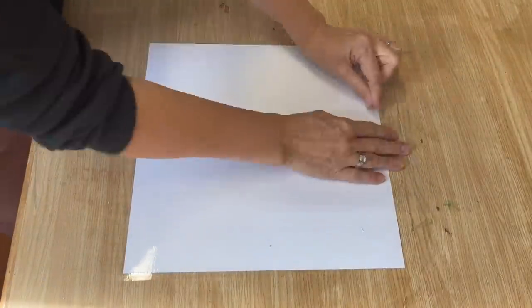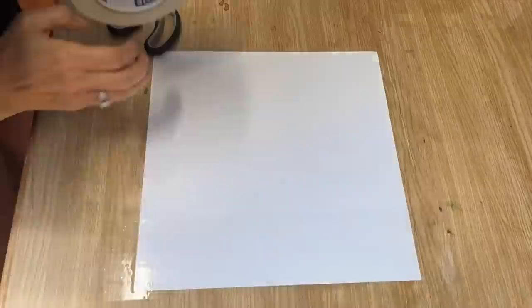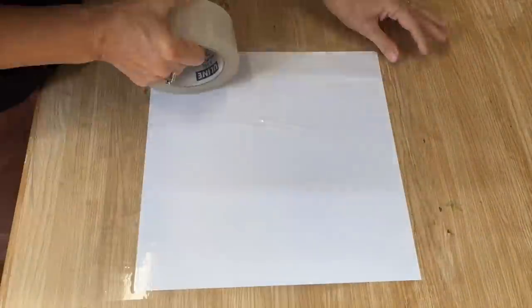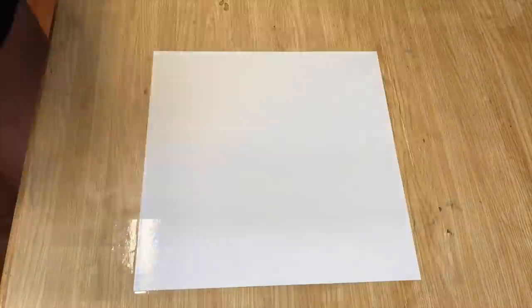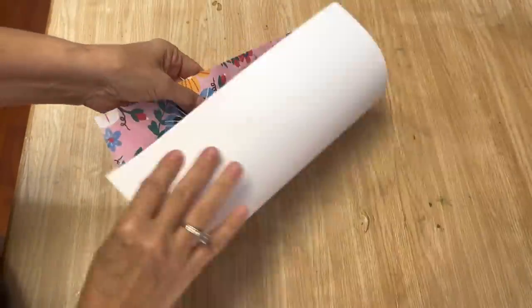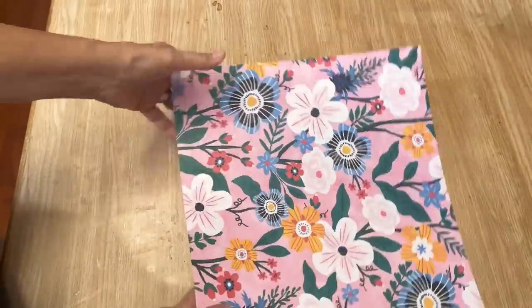You can do this process a couple times if your paper is really thick until you get the desired paper thickness you're looking for. So we've had a really thick piece of scrapbooking paper and now it's nice and thin and it's going to be way easier to decoupage.